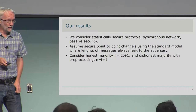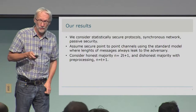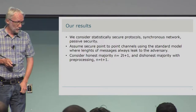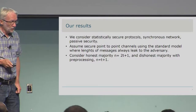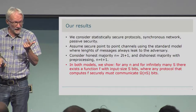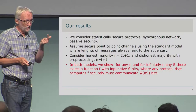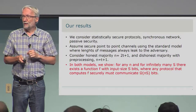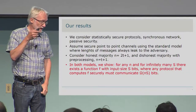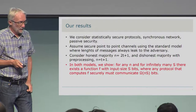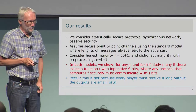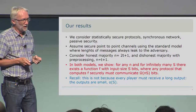There are two models we consider. Honest majority, where the number of players n is 2t+1 where t is the corruption threshold, and also dishonest majority with preprocessing, where n can be t+1. What we show in both models is that for any number of players n, and for infinitely many input sizes s, there exists a function f with input size s bits such that any protocol computing f securely must communicate at least some constant times ns bits. So there must be this factor-n overhead compared to the input size. This is not because every player has to receive a long output — the outputs are in fact very small.